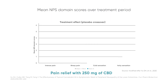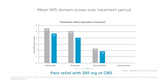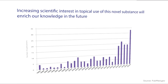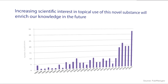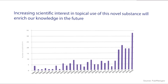The trial by Xu et al. showed that topical CBD significantly reduced intense pain, sharp pain, cold sensation, and itchy sensation in patients with symptomatic peripheral neuropathy. Increasing scientific interest in topical use of this novel substance will enrich our knowledge in the future.